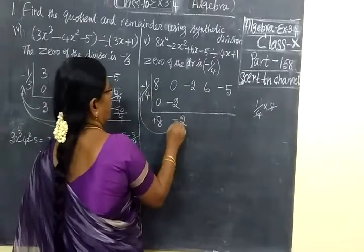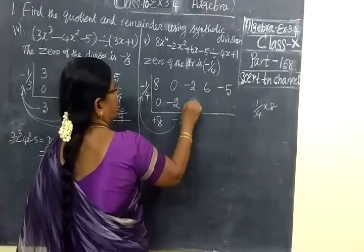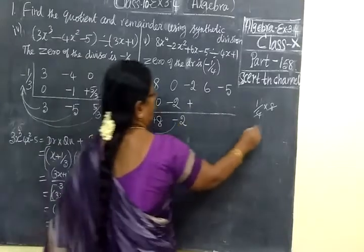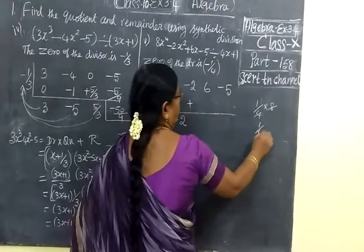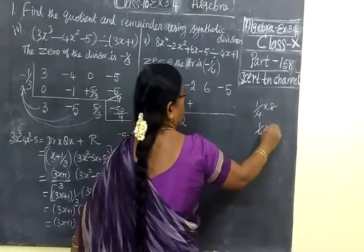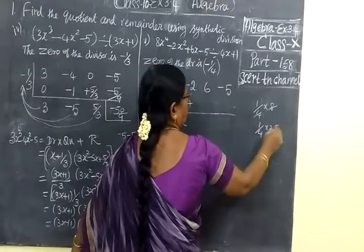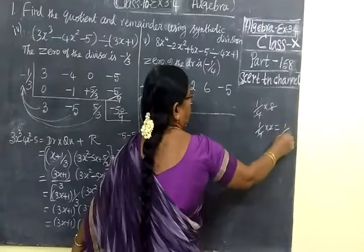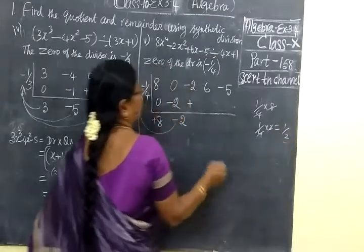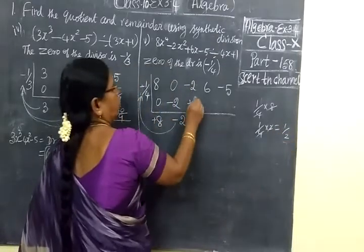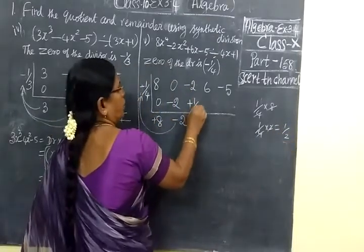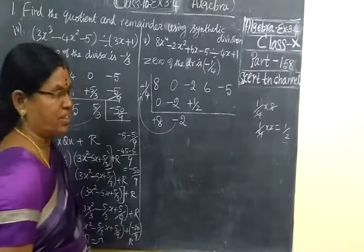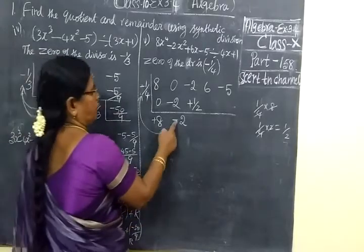Now minus into minus is plus. First we put the sign. Then 1 by 4 into 2 — if you cancel, you get 1 by 2. So here you are writing 1 by 2. This is somehow difficult.